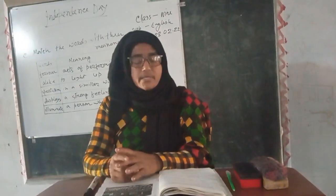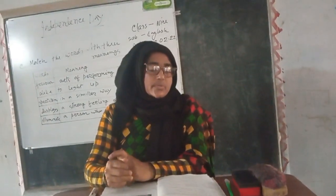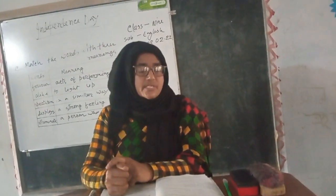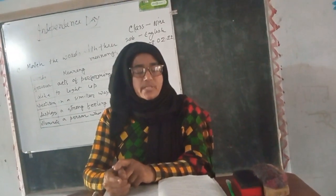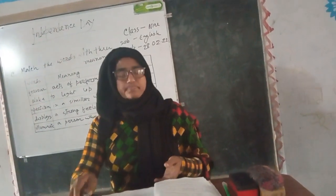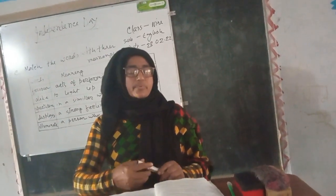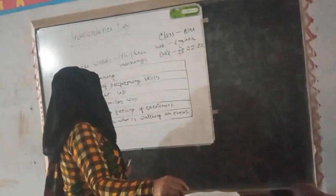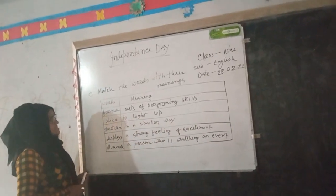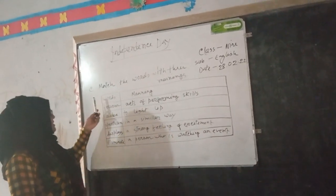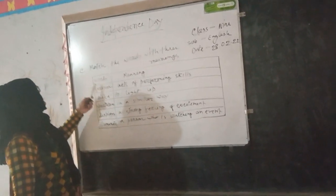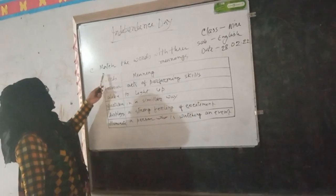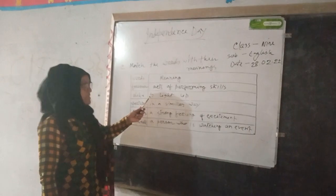We have finished our reading. Now we go to section C. Here, match the words with their meanings — that means synonyms. Everybody, follow your books and also follow my blackboard. Here I draw a table with some words given on the left side and their synonyms on the right side.